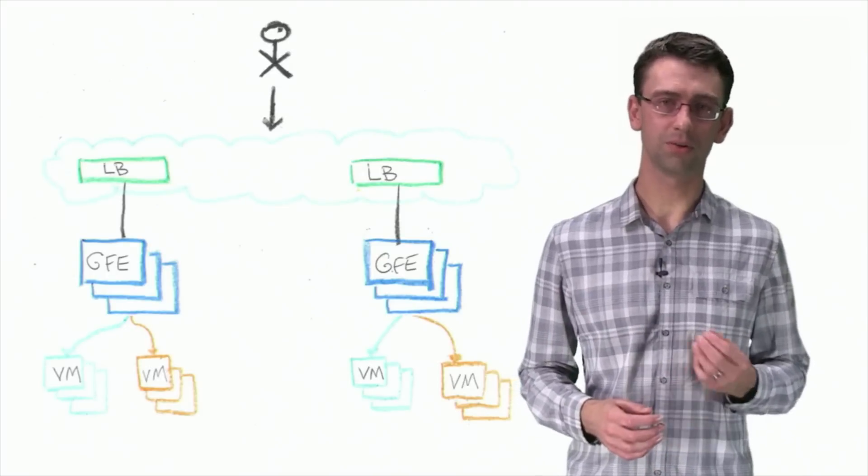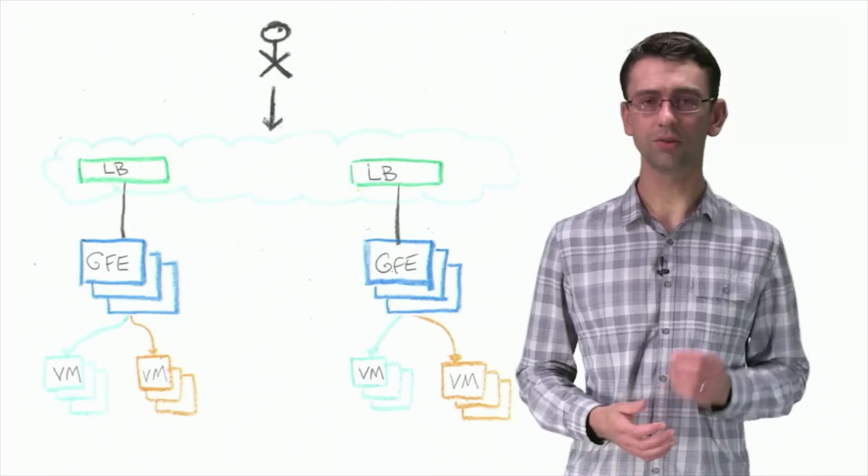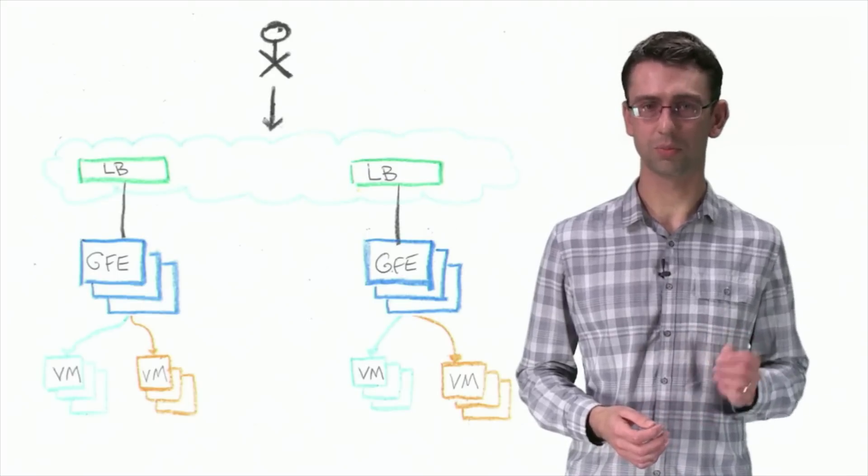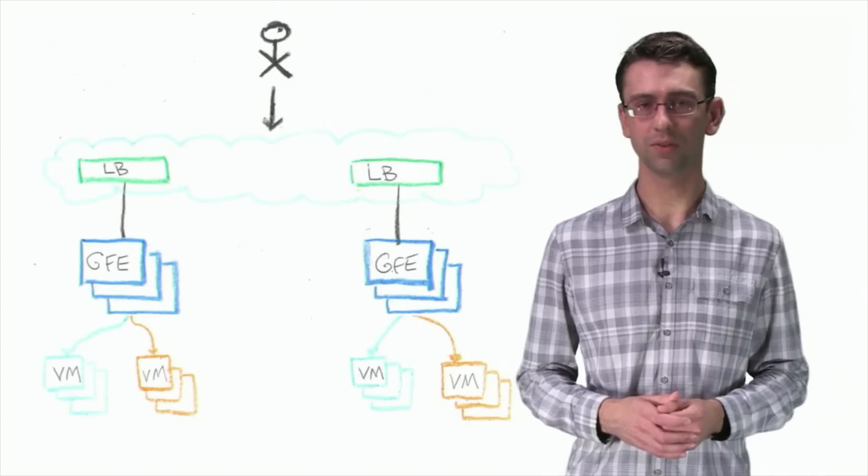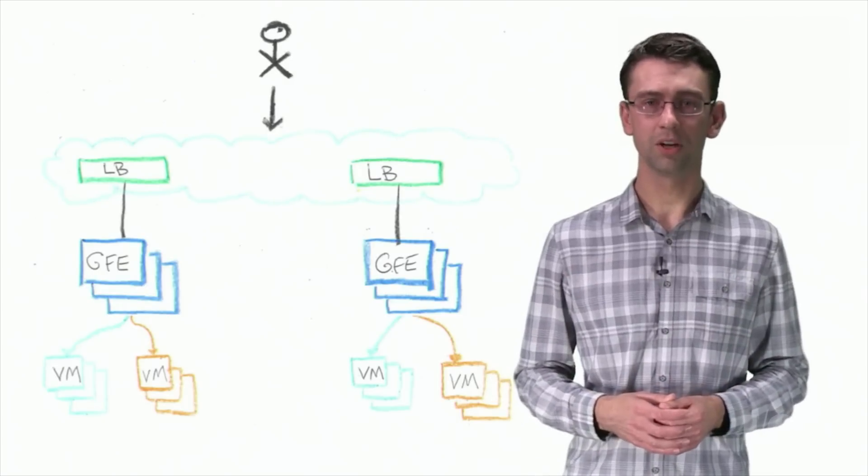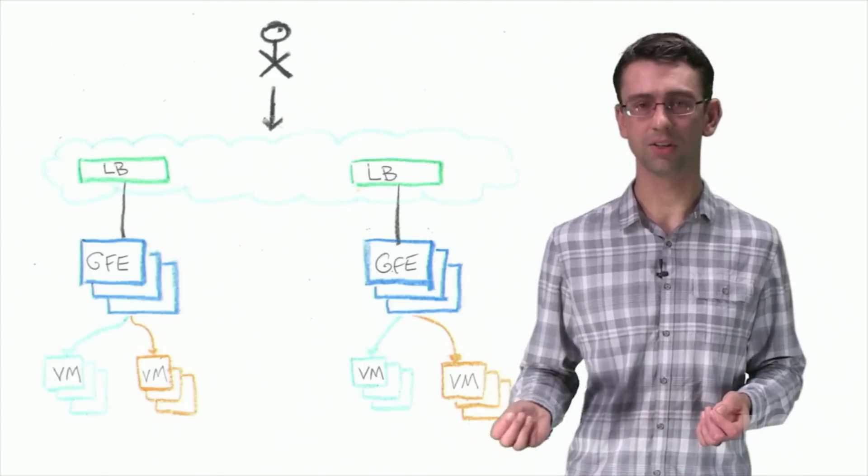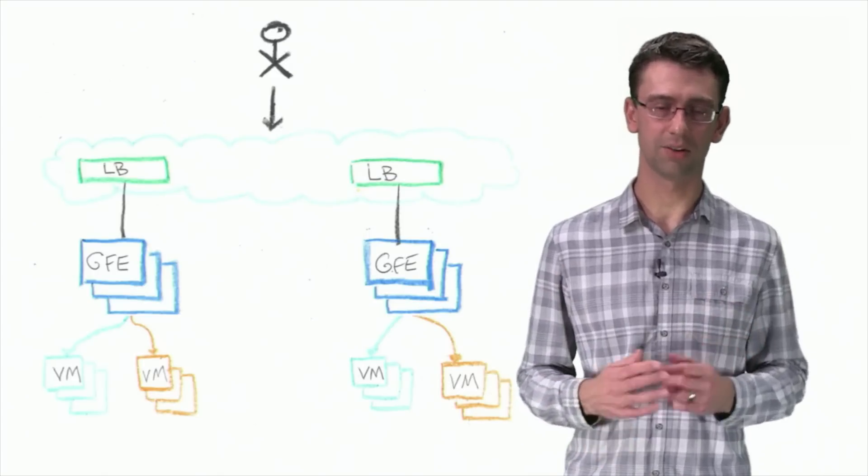Advanced customers can also take advantage of URL maps with HTTP load balancing. Just as Google uses different backend services for different products, URL maps allow customers to send portions of the URL space to different groups of VMs. For example, you may want to serve static files from a different set of VM instances than the dynamic content. HTTP load balancing allows you to do this.